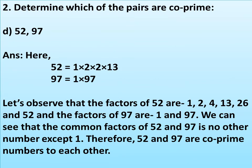For part d, the pair is 52 and 97. Here 52 = 1 × 2 × 2 × 13, and 97 = 1 × 97. The factors of 52 are 1, 2, 4, 13, 26, and 52. The factors of 97 are 1 and 97. We can see that the common factor of 52 and 97 is no other number except 1. Therefore, 52 and 97 are co-prime numbers to each other.